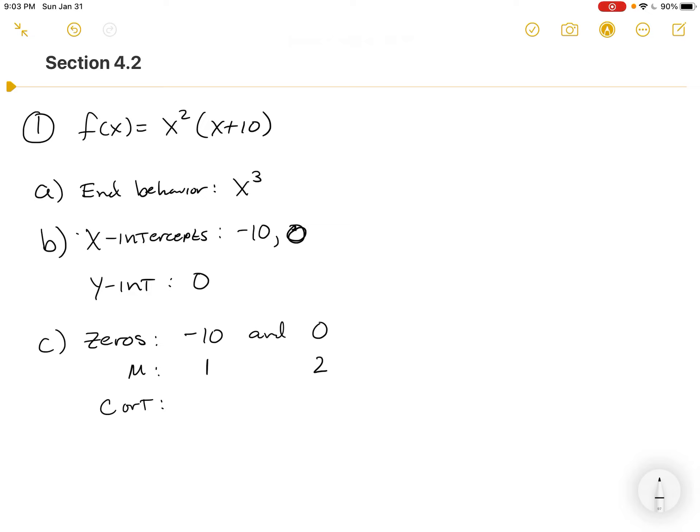And then they want to know, does it cross or touch? I'm going to do C or T. Negative 10 has odd multiplicity with the multiplicity of one. It's going to cross. And zero has even multiplicity. It's going to touch. And you'll see what that looks like here.